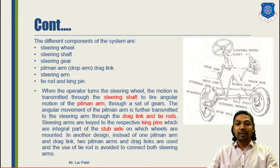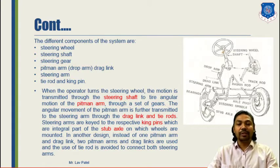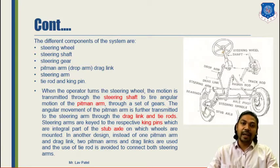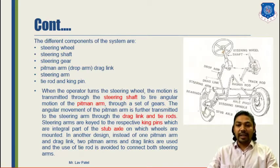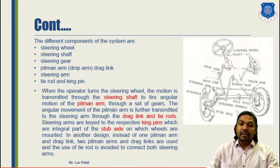The motion transmitted through the steering shaft to the tire is an angulation motion of the pitman arm through a set of gears. The angular movement of the pitman arm is further transmitted to the steering arm via drag link and tie rods. The steering arms are keyed to respective kingpins, which are integral parts of the stub axle. There are several links and gears between the steering wheel and stub axle, and by cleverly choosing our components we can combine our steering system.